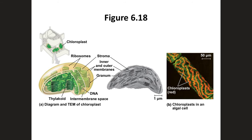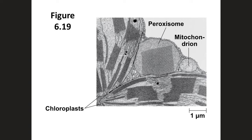Both mitochondria and chloroplasts generate ATP. Peroxisomes are specialized metabolic compartments bounded by a single membrane. They break down hydrogen peroxide and convert it into water. Peroxisomes perform reactions with many different functions. Some peroxisomes use oxygen to break fatty acids down into smaller molecules, while peroxisomes in the liver detoxify alcohol and other harmful compounds by transferring hydrogen from the poisonous compounds to oxygen.